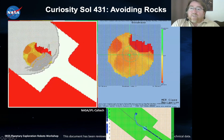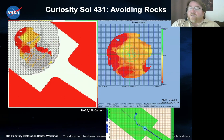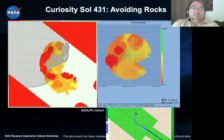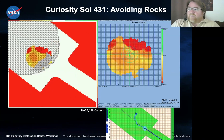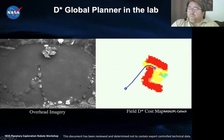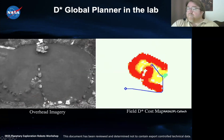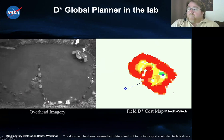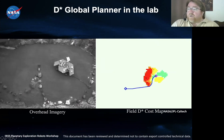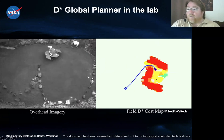DSTAR is a capability we first demonstrated on Spirit and Opportunity, and it's been used all the time we do autonomous driving on Curiosity. In a lab demo on Earth when developing the capability for MER, we set up terrain, didn't tell it anything about it, and it went exploring and building up a map. DSTAR is smart enough to figure out when it needs to backtrack and work its way around, and also figure out when there's no path to go forward.